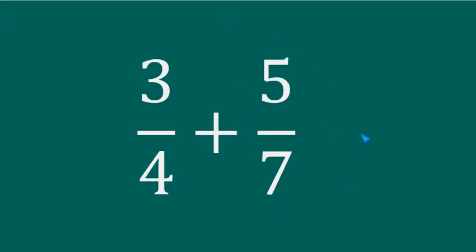What do these fractions represent? The first represents each quantity after dividing 3 quantities into 4 parts or groups. Similarly, the second one represents each quantity after dividing 5 quantities into 7 parts or groups. We know very well that negative parts or groups have no meaning in real life, whereas the numerator may be negative. This is the hidden concept that explains very well why we can't find the LCM of negative numbers.